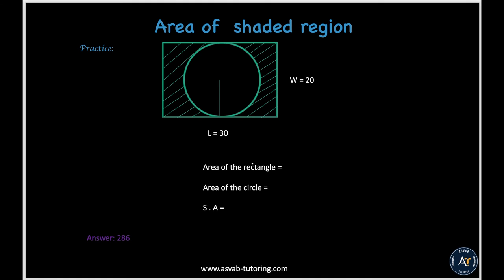Here is a practice problem with the same setup — a rectangle with a circle inside. The sides of the rectangle are given; find the shaded area using the same method.